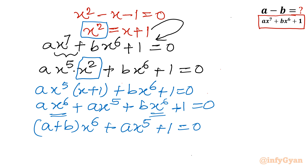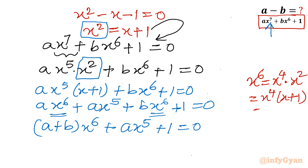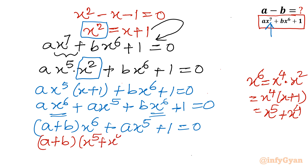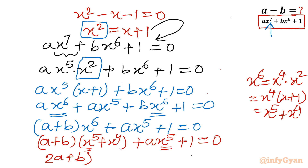Expanding that, from the first and third terms x to the power 6 is common, so I can write (a plus b) times x to the power 6 plus b times x to the power 5 plus 1 equal to 0. One degree has been reduced — from 7 it is now 6. I will apply the same job again. x to the power 6 can be written as x to the power 4 times x squared, and replacing x squared with x plus 1 gives x to the power 5 plus x to the power 4. Collecting x to the power 5 terms gives (2a plus b) times x to the power 5 plus (a plus b) times x to the power 4 plus 1 equal to 0.